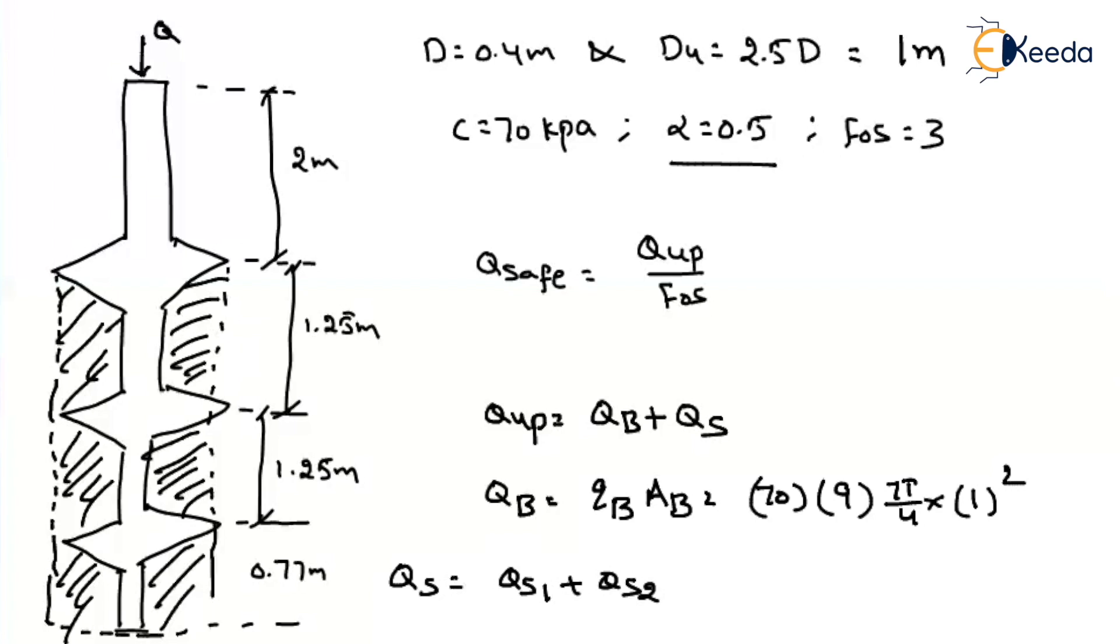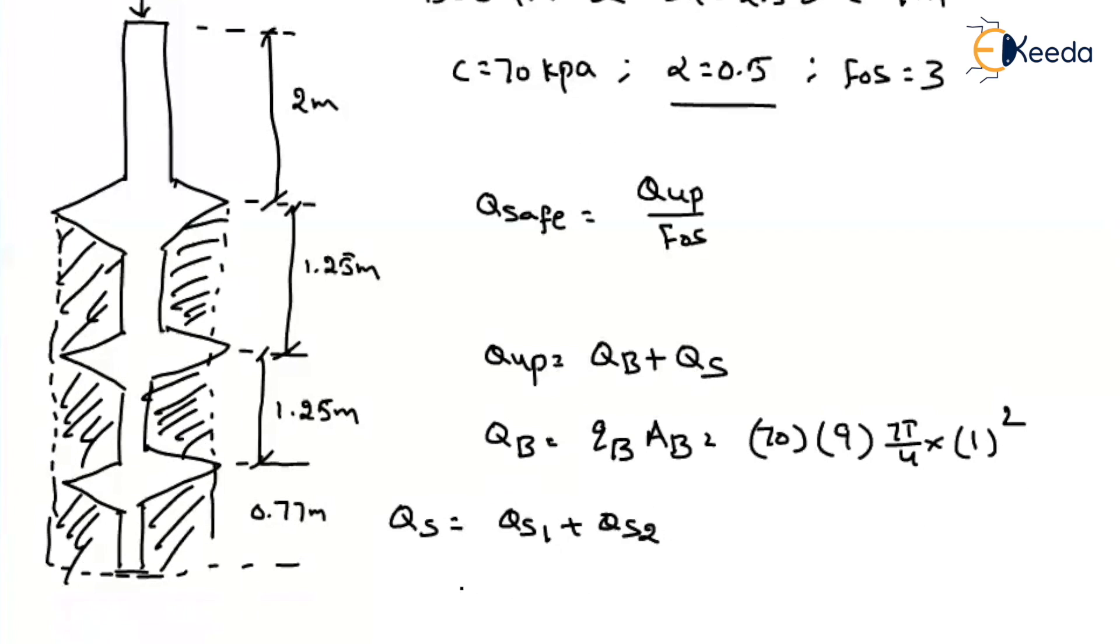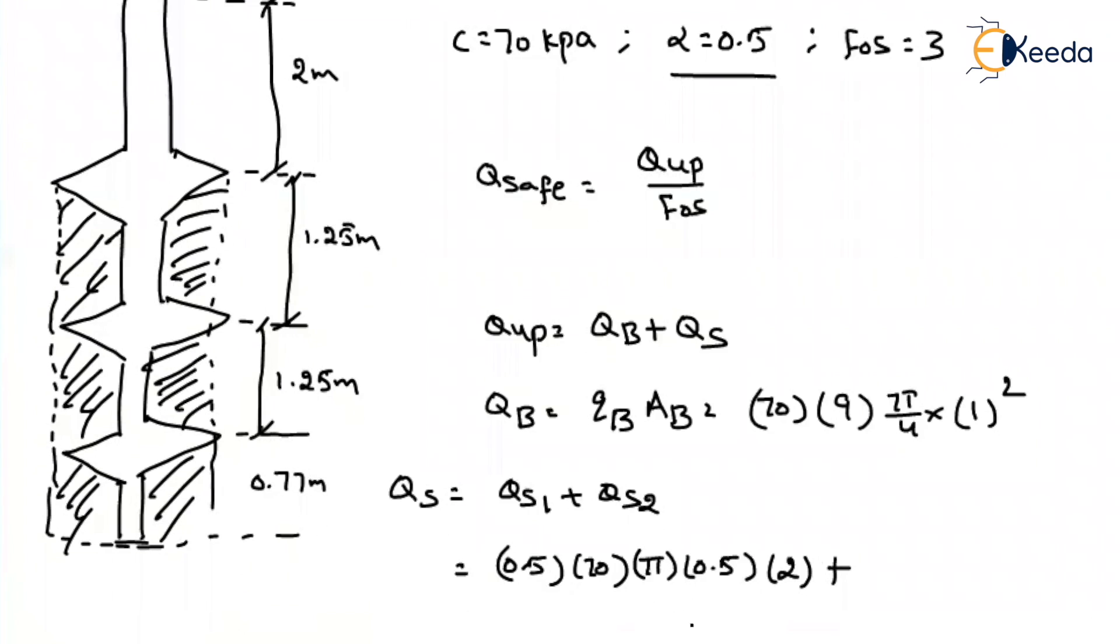Because soil and soil is in contact. So if I expand this, alpha into C. What is the alpha in the first part? 0.5. What is the C value? 70. And what about the area? That is nothing but Pi into whatever the diameter, 0.5 up to a length of 2 meter. Plus, what about the remaining part? The remaining part, as the soil and soil is in contact, alpha value 1. What about the C value? 70. What about the surface area? Pi into whatever the diameter. So this is 0.4, diameter is 1, into a length of 1.525 plus 1.25. How much? 2.5 plus 3.77, 0.77. How much? That will be nothing but 3.27.